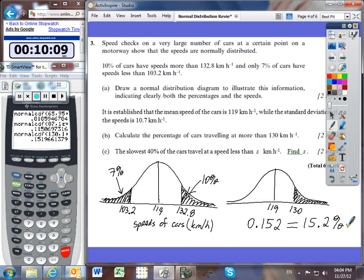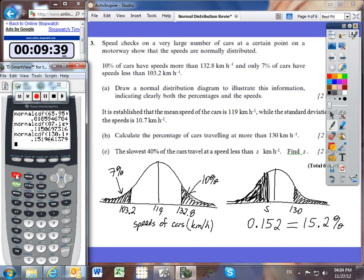And Part C says that the slowest 40% of the cars traveled at a speed less than S. So here's the slowest 40%. Maybe it's even more of them. There's about 40%, and they are traveling at a speed that is less than S. I've got to find out what that value of S is. Because they've given us the percentage, now we're going to use inverse norm. So we'll go down to inverse norm.